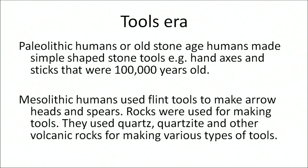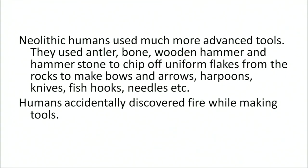Paleolithic or Old Stone Age humans made simple shaped stone tools such as hand axes and sticks, around 100,000 years old. Mesolithic humans used flint tools to make arrows, hatchets, and spears, using quartz and other volcanic rocks. Neolithic humans used much more advanced tools — they used antler, bone, wooden hammers, and hammer stones to chip off uniform flakes from rocks to make bows and arrows, harpoons, knives, fish hooks, needles, and so on. Humans accidentally discovered fire while making tools.